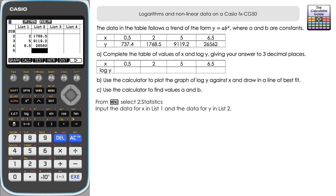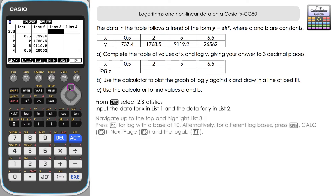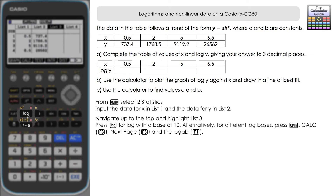To answer part A, we need to populate list three with our log Y values so we can fill in our table. The calculator will find all of these at once. Go up to the top and highlight list three — we're going to find the log of all the values using the log to base 10, or common logarithm, button.